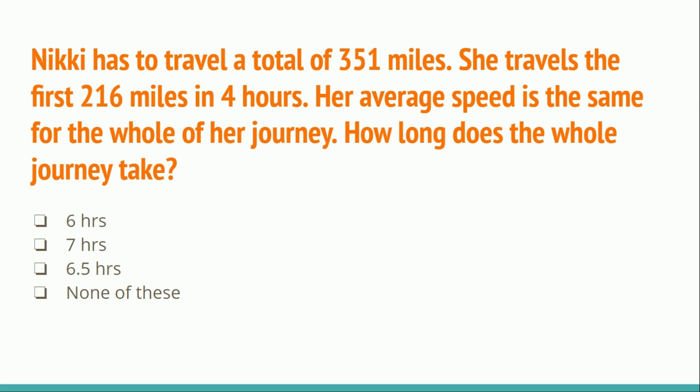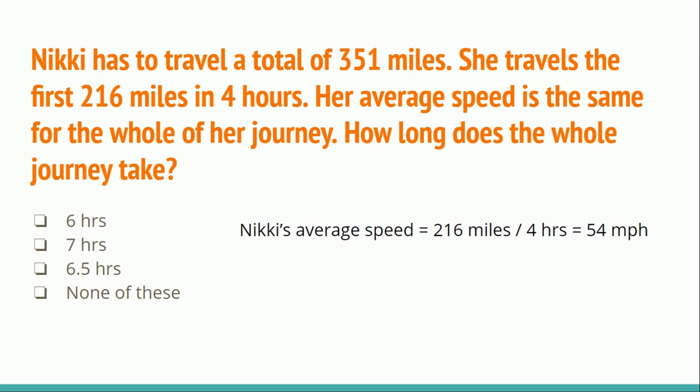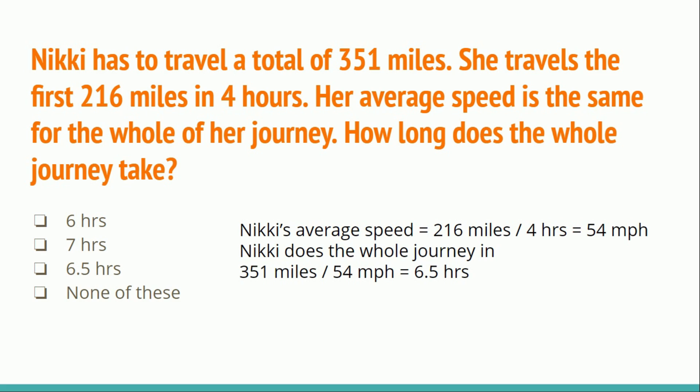The next question: Nikki has to travel a total of 351 miles. She travels the first 216 miles in 4 hours, and her average speed is the same for the whole journey. How long does the whole journey take — 6 hours, 7 hours, 6.5 hours, or none of these? Since Nikki's average speed is 216 ÷ 4 = 54 mph, total time = 351 ÷ 54 = 6.5 hours. The correct answer is 6.5 hours.